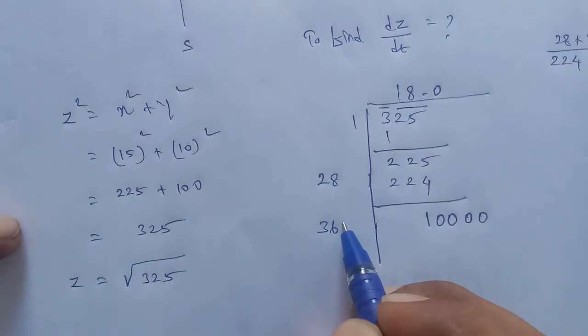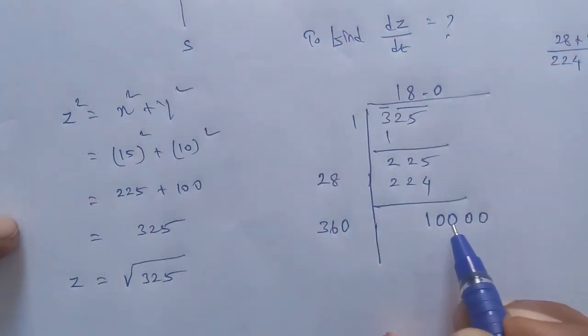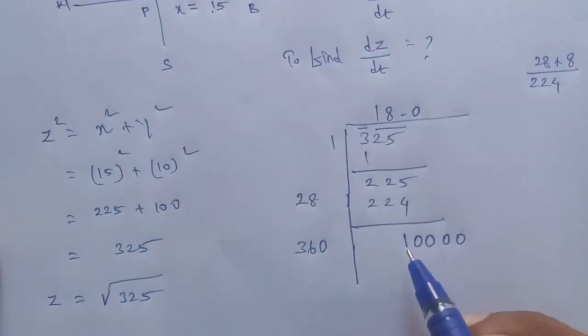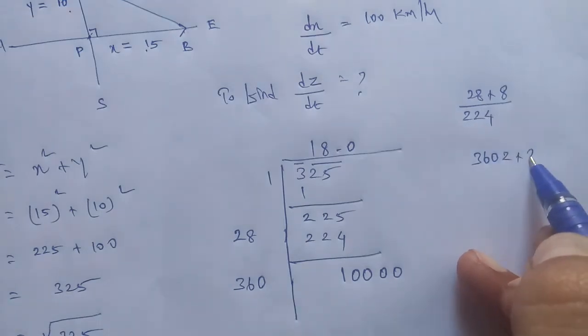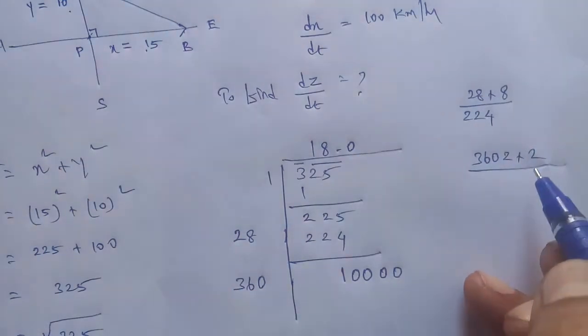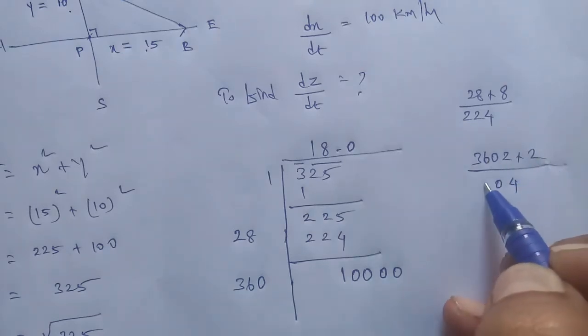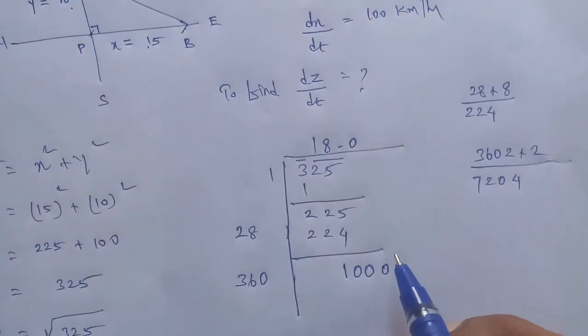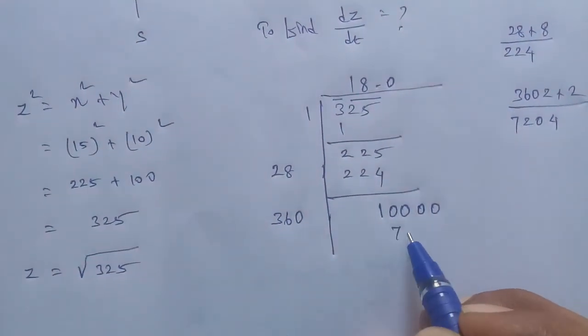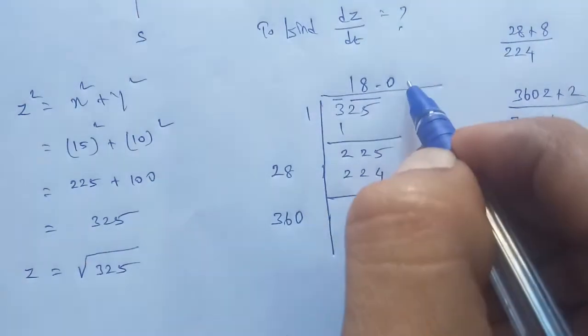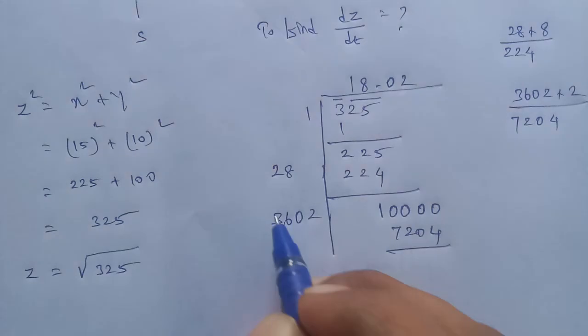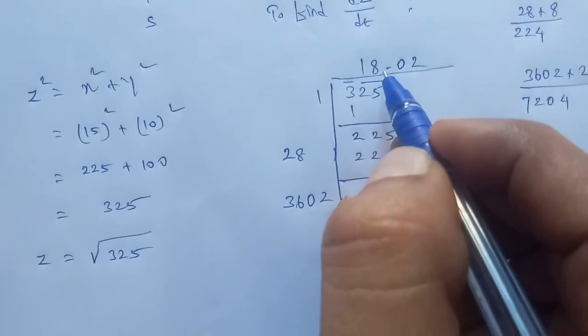Next, 360 into 2, so 720. Two times 4, 7204. Seven times two times 361. So 100, 7264. Therefore, the root number is 18 times. So the answer is 18.02.